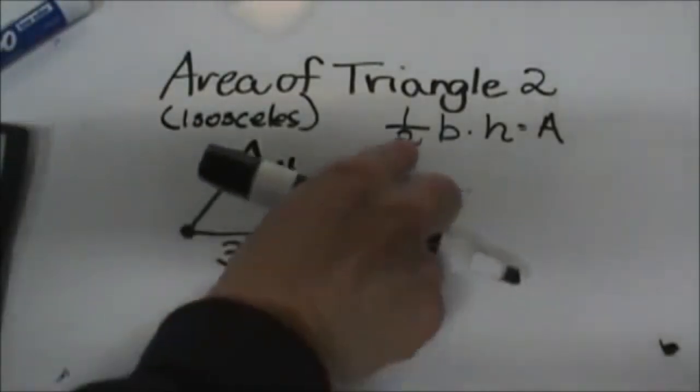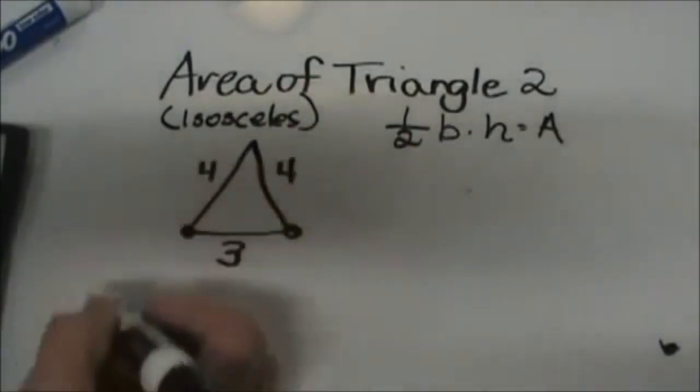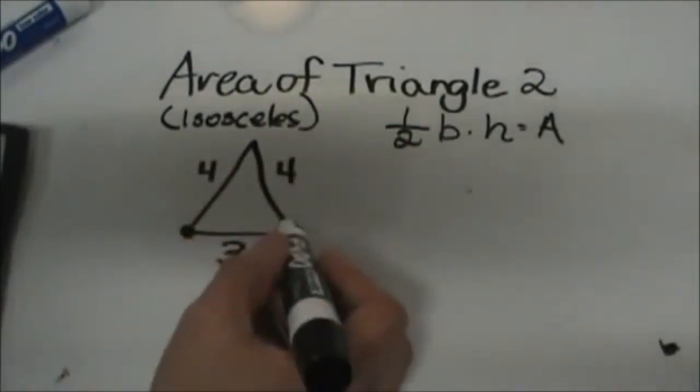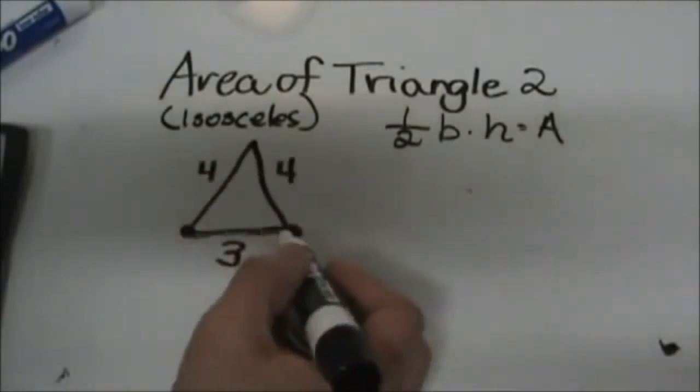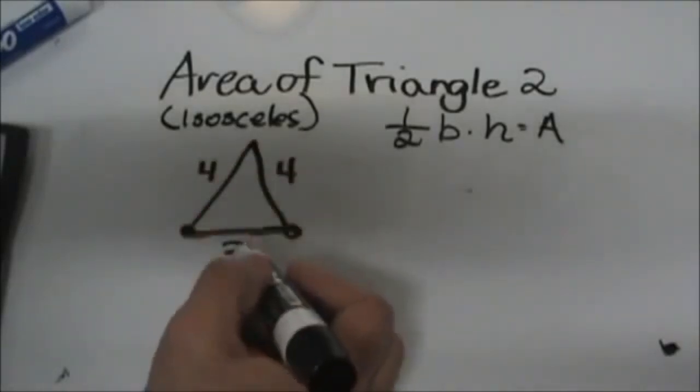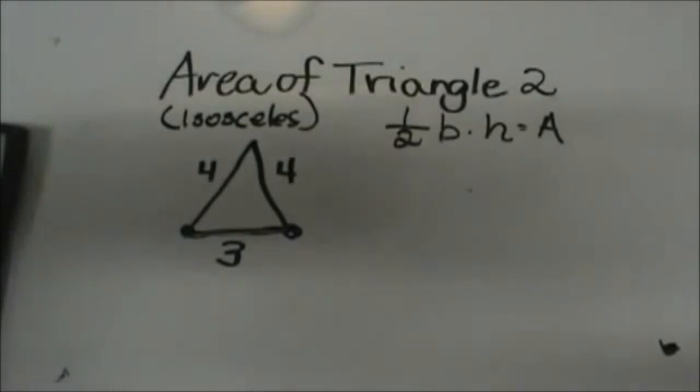Well area of a triangle is 1/2 the base times the height. In this triangle since we have an isosceles triangle, I'm going to use the side that is not the same as my base. You can turn it different ways but I'm using that as my base because I can figure my height out.